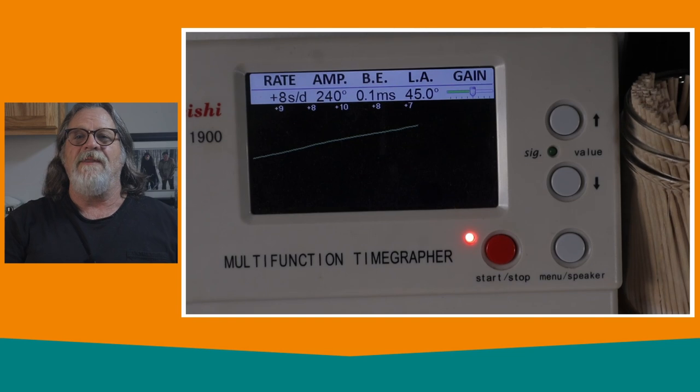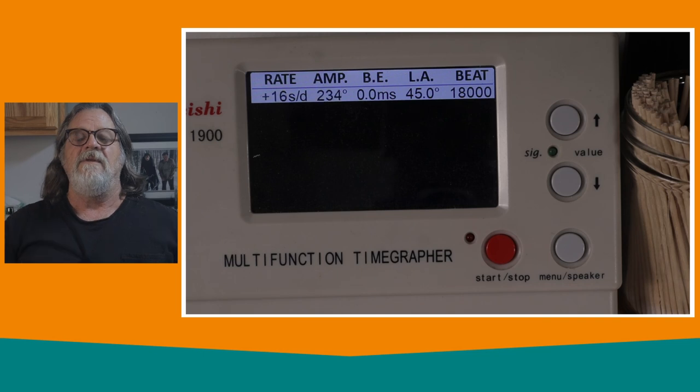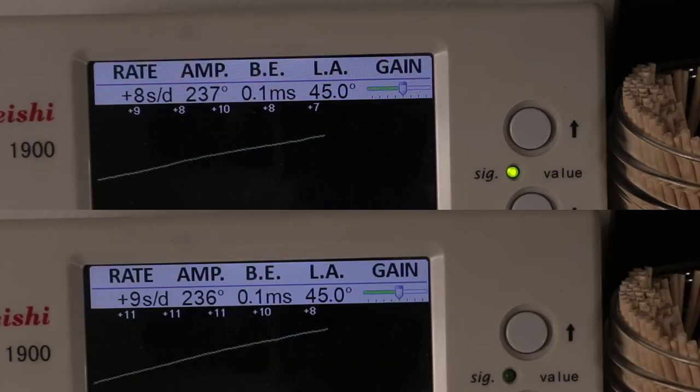Now watch what happens when we run this movement on the time grapher again, first in the dial down position. The dry jewel is under the balance wheel and you can see the amplitude is 240 degrees and the rate is at plus eight seconds per day. Now when we check the dial up position with the divot under the balance wheel, our amplitude settles out at 236 degrees with a rate of plus nine seconds per day. As you can clearly see, I've been able to equalize the horizontal positions by changing the friction on one of the balance pivots so that now we are within four degrees of amplitude and one second per day.